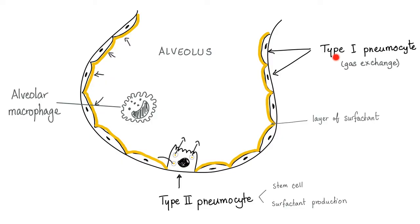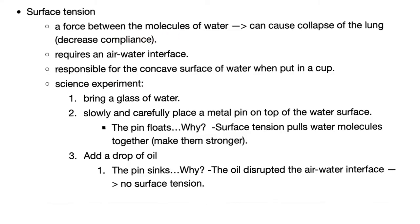In brief, type 1 pneumocyte has only one function: gas exchange. Type 2 pneumocyte has two functions: it acts as a stem cell to regenerate type 1 and type 2 pneumocytes, and it produces surfactant, which is anti-surface tension. Surface tension is a force between molecules of water that can collapse the lung. It requires an air-water interface and is responsible for the concave surface of water.